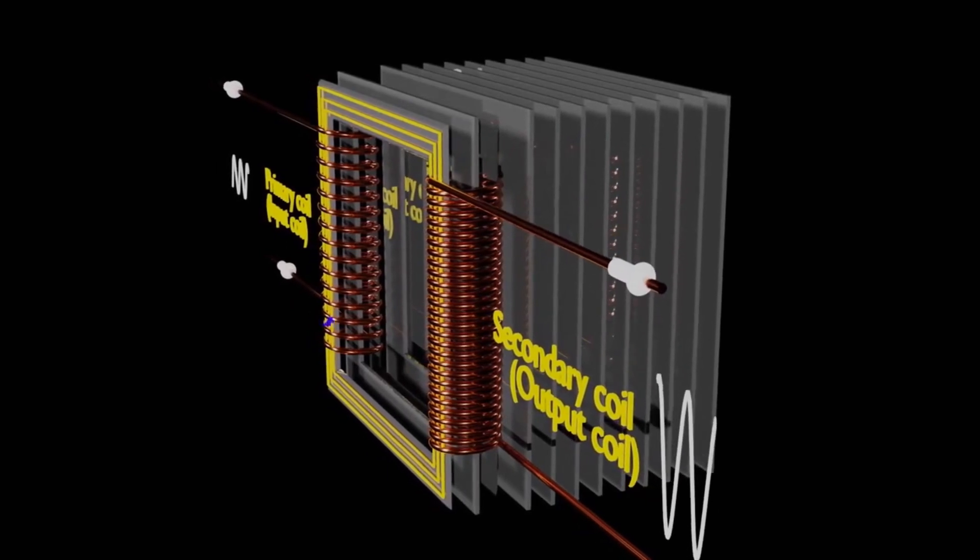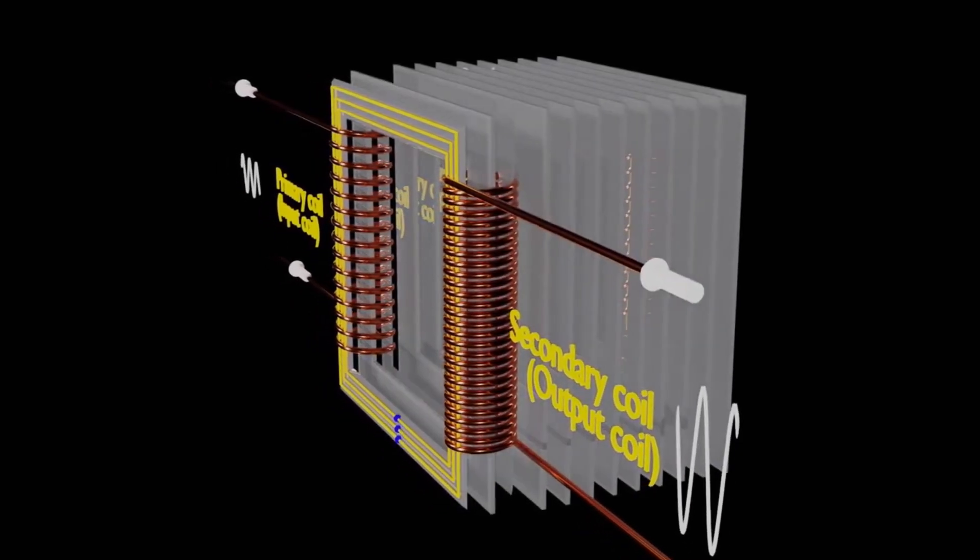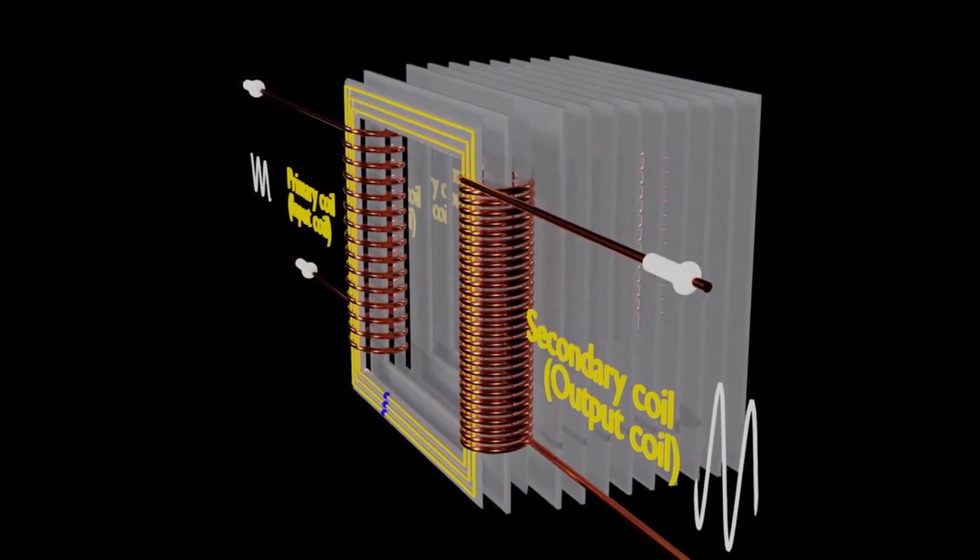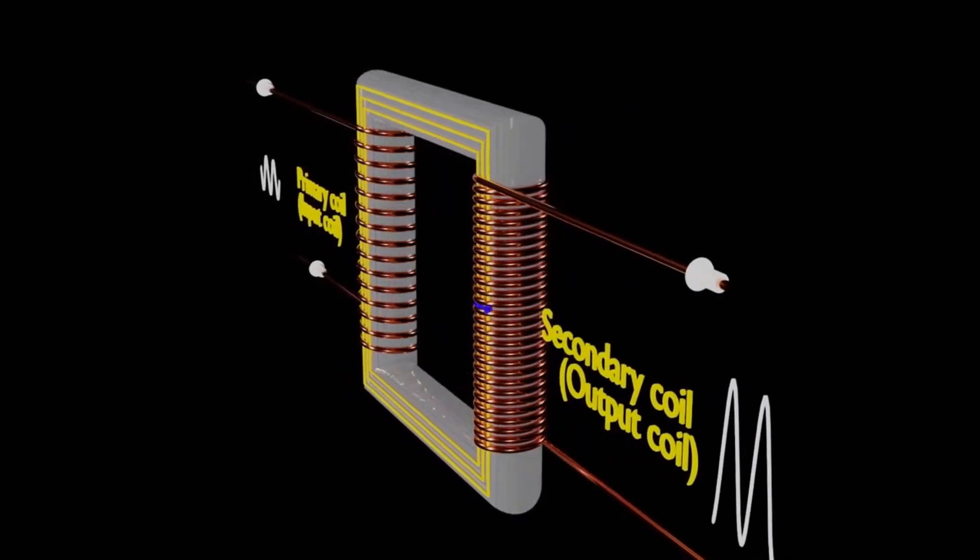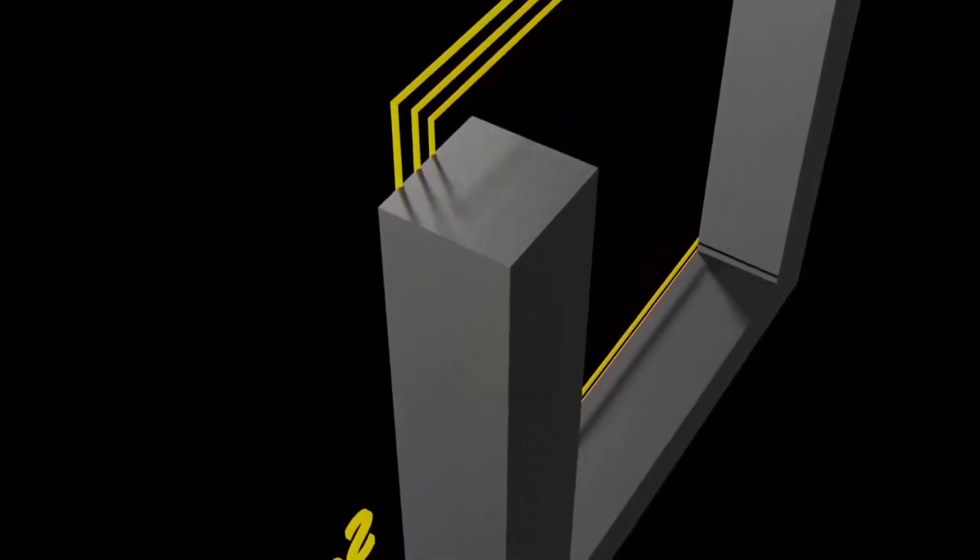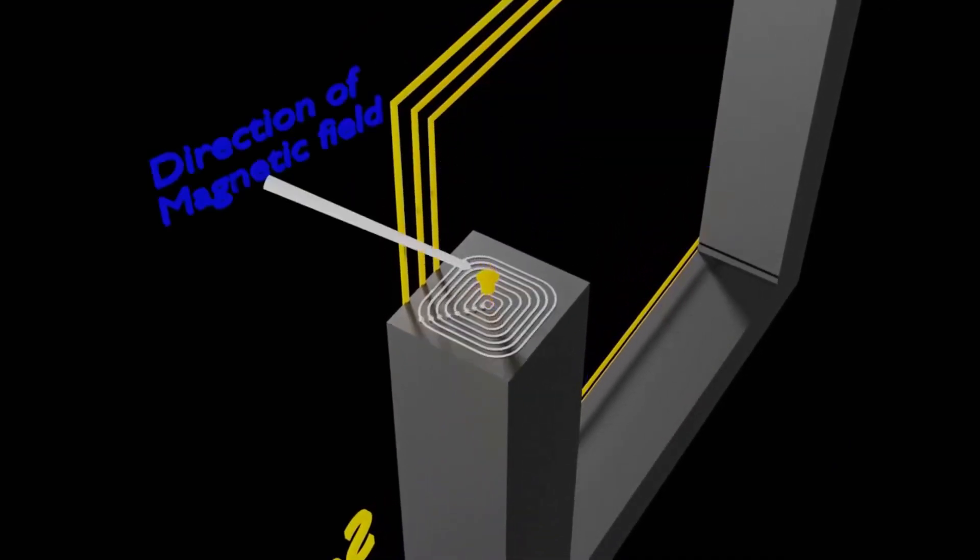By creating these layers, we minimize the effective area where eddy currents can circulate. Now, you might ask, why is this important? Here's the thing. Eddy currents, those circulating currents induced within the core material due to the changing magnetic field, can cause energy losses in the form of heat.